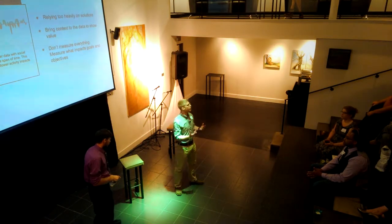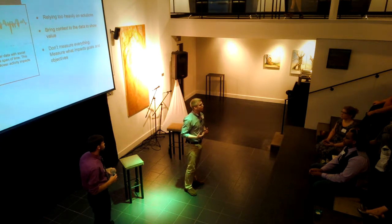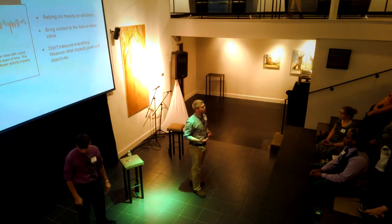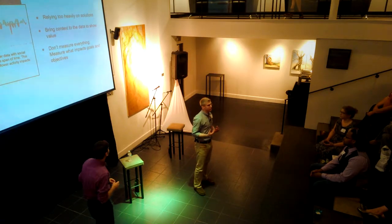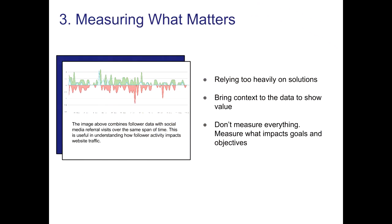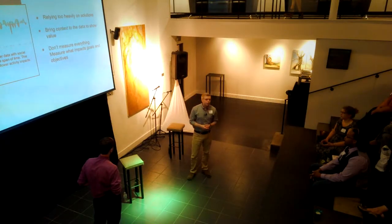Now we're going to get into a little bit of the numbers game. The numbers themselves don't matter nearly as much as the context behind them. The chart here, which we made manually — not derived automatically from one of these platforms — has two sets of data. One set is the number of followers a branded Twitter profile has over a 90-day period. The second is website traffic to that brand's website from social media — people going to the social media profile and then moving to the company's website. That's what we're talking about when we bring context to the data.